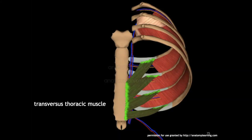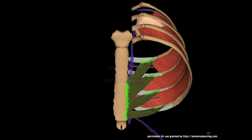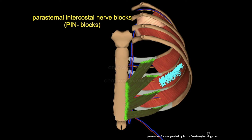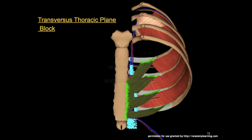On this slide, the transverse thoracic muscle is shown in green and the internal intercostal muscle in red. The internal thoracic vessels run anterior to the transverse thoracic muscle but posterior to the ribs. For PIN blocks to achieve analgesia over a large area of the anterior chest, multiple injections are needed into several intercostal spaces. In contrast, with the TTP block, one injection only will cover several intercostal spaces to provide analgesia to the anterior chest.